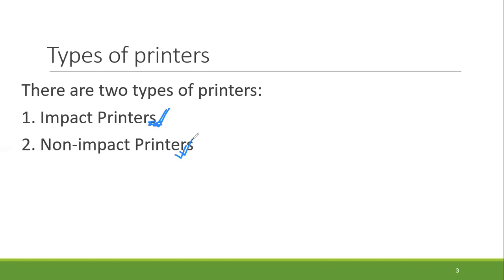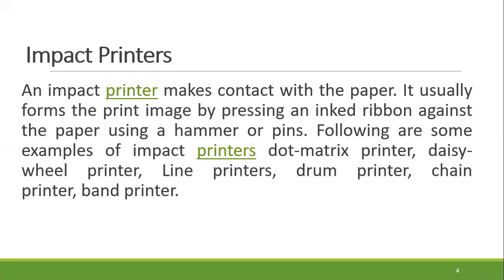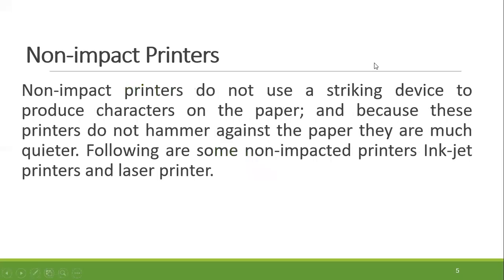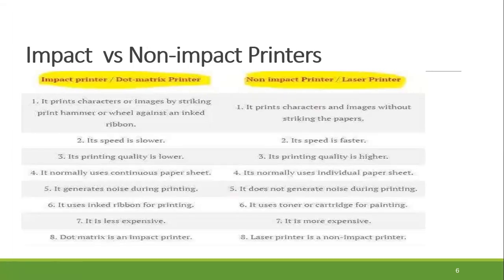If you have a non-impact printer, it will not have direct interaction with your paper. Examples of non-impact printers include the inkjet printer and laser printer. The impact printer has direct interaction with the paper — this is the dot matrix printer. So the first thing we have to understand is the difference between the impact printer and the non-impact printer, or the dot matrix printer versus the laser printer.